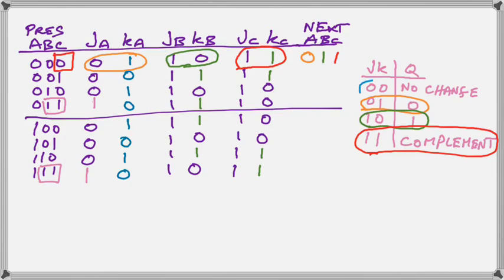Now the last one we're going to do is 0, 0, which means no change. We have 0, 0 on JA and KA, as shown in blue. We look at the present state and see that it is a 0, as shown in the blue square on the left, so we put back a 0 there for the next state of the A flip-flop.